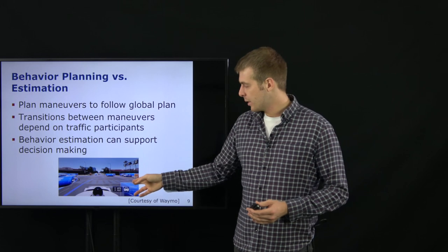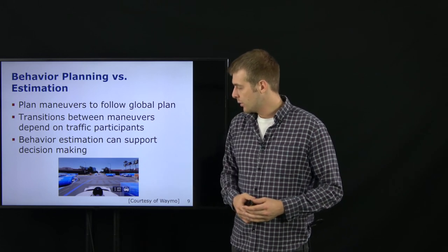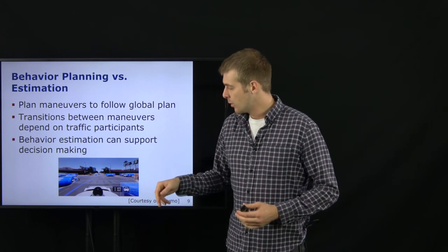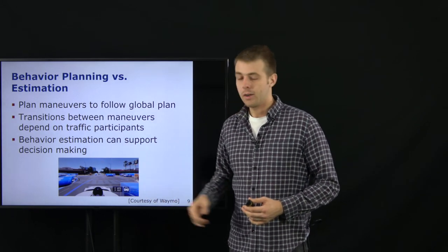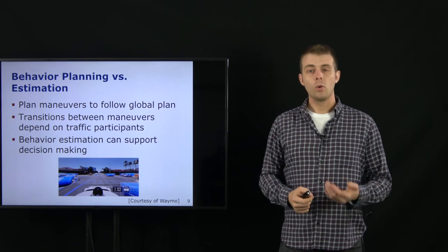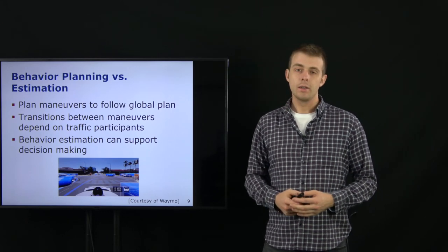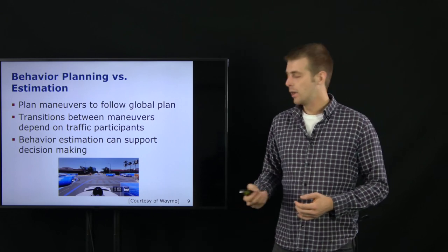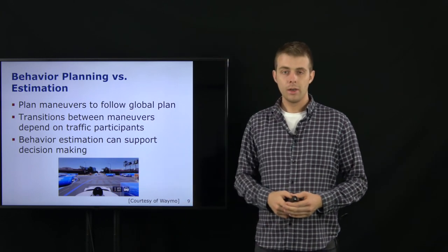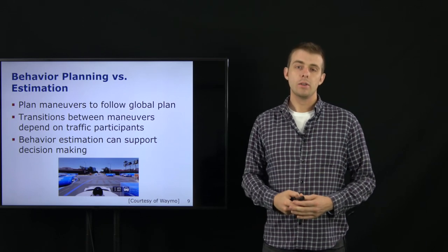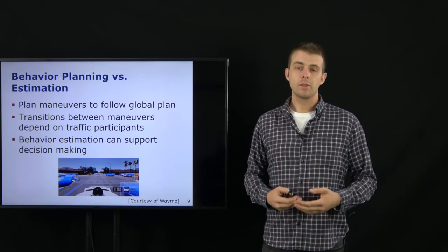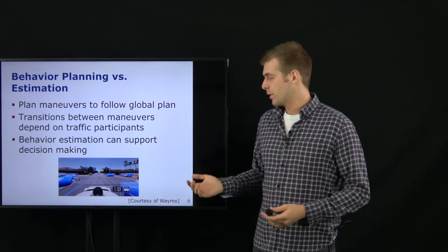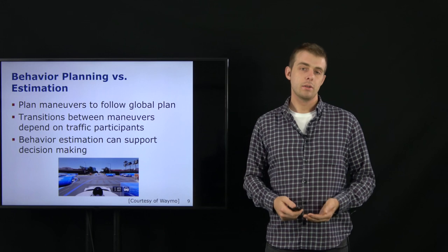Here is another example with an intersection. We need to perceive the environment and check the different traffic lights, but we also need to check where the other cars are. It can always be the case that other cars are violating traffic rules — even if we have a green light, one of the other cars might run the red light.